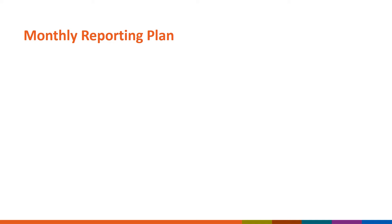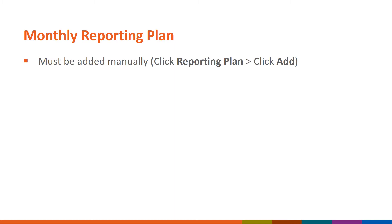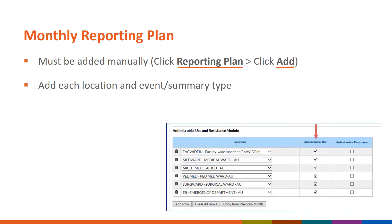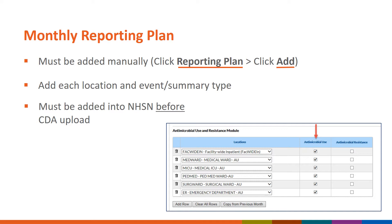The next step for ensuring a successful CDA upload is to add the monthly reporting plan. Monthly reporting plans must be added manually by navigating to the monthly reporting plan section on the left-hand navigation bar within your NHSN facility. From the left-hand navigation bar, click Reporting Plan, then click Add. Select the month and year for the new reporting plan. You will need to add each location and event or summary type to the reporting plan. Each location is listed separately in its own row. NHSN will not accept any CDA files for locations, events, or summary types that are not listed in the monthly reporting plan.